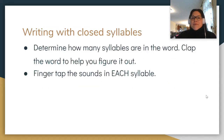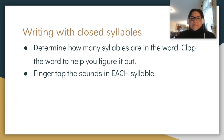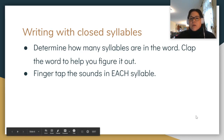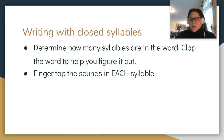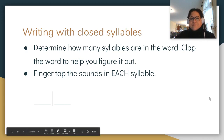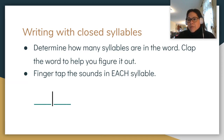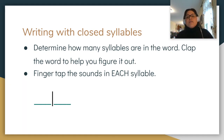Now we also have to be able to write with closed syllables. So how do we make sure that we are using the correct spelling when we're writing? Well, we have two things we can do: we want to determine how many syllables are in the word, and we can clap the word to figure that out. Then we're going to finger tap the sounds in each syllable. The word I'm going to use is 'picnic.' Pic-nic — that's two syllables.